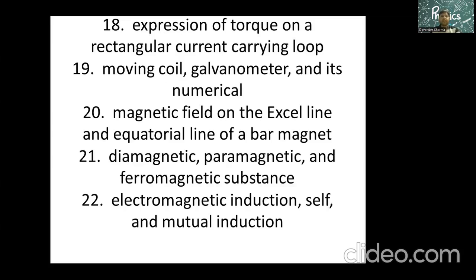Moving coil galvanometer and the numericals based on it, how it can be converted to the ammeter and voltmeter, especially for shunt. Magnetic field on the axial line and equatorial line of a bar magnet, dia, para, and ferromagnetic substances. So these are two unit number three.